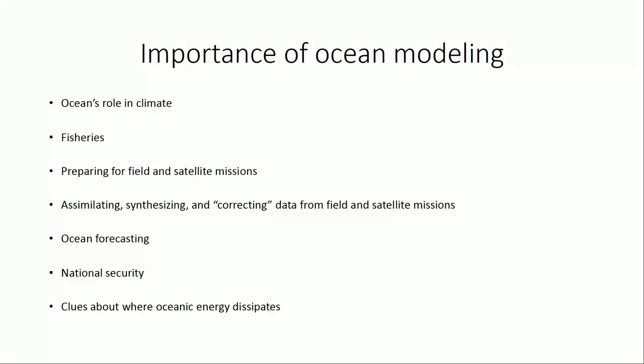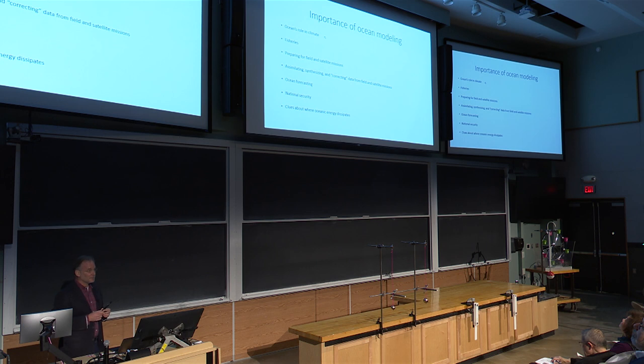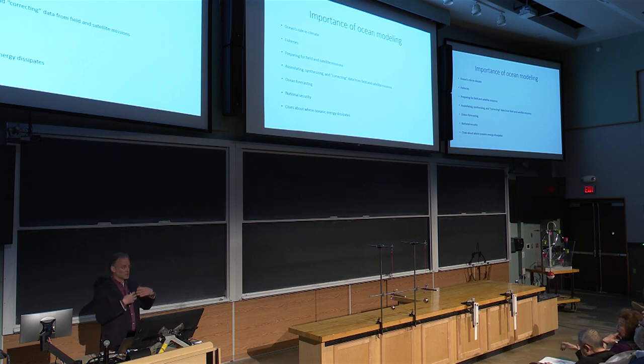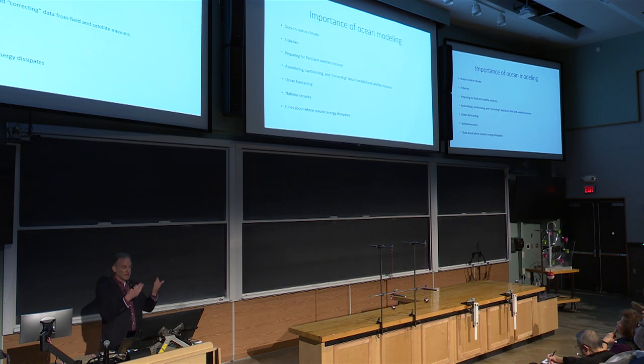On the importance of ocean modeling: the ocean is important for climate. Water has a large heat capacity, so it stores a lot of heat, moves a lot of heat around, and exchanges heat with the atmosphere. As many of you probably know, hurricanes are due to the latent heat release of evaporated water from the ocean. So that's one of the main reasons we care about the ocean, but there are many others.